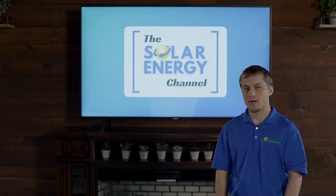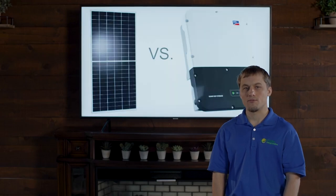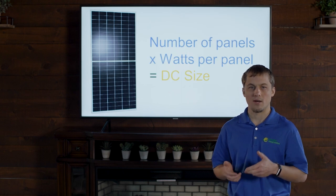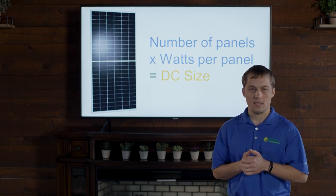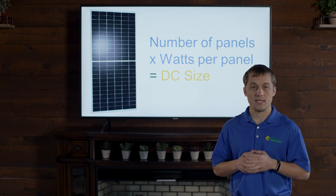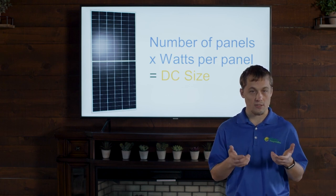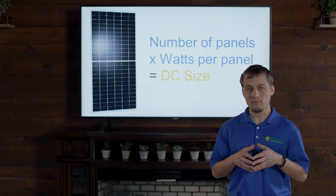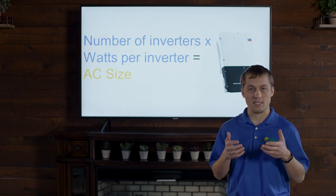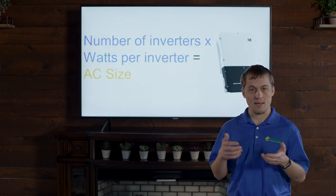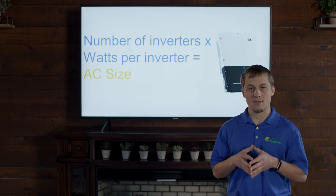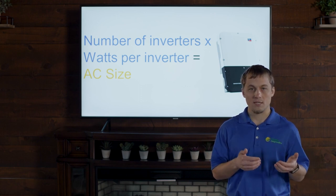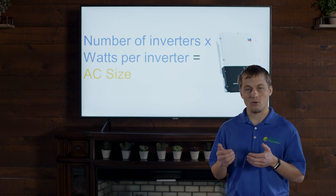The DC-AC power ratio is found by taking the number of DC watts in a system divided by the number of AC watts in the system. The DC watts is found by taking the number of modules or solar panels times the watts per panel, and the AC watts is found by taking the number of inverters times the watts per inverter. You get the DC-AC power ratio by taking the total DC watts divided by the total AC watts.